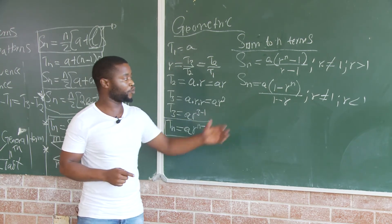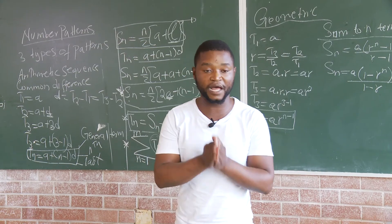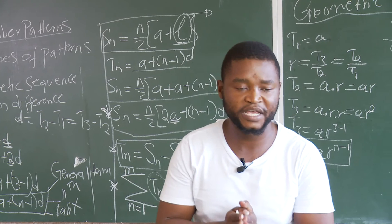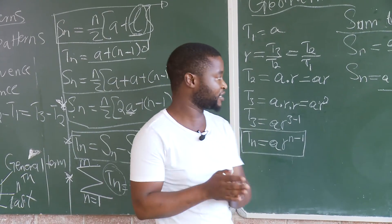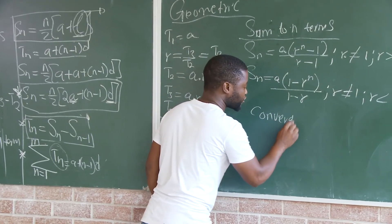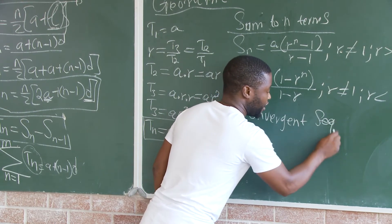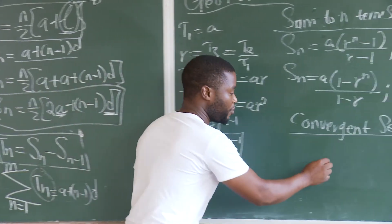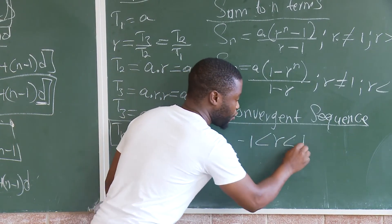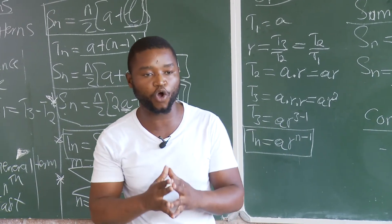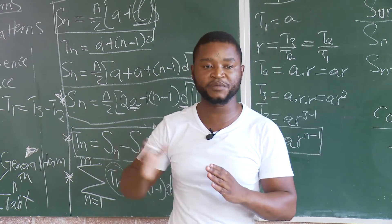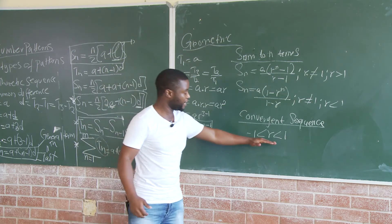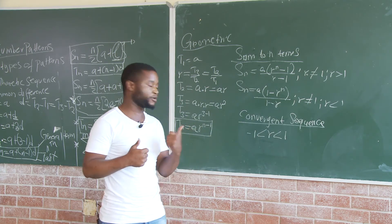Another most important thing is that we have a geometric sequence where the sequence is said to be convergent. A convergent sequence is one where the common ratio becomes very important. For a convergent sequence, the common ratio R is greater than negative 1 but less than 1. We know our sequence is convergent when we have a geometric sequence — not arithmetic and not quadratic — and R is greater than negative 1 but less than 1.